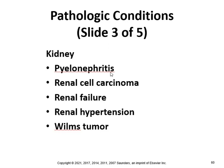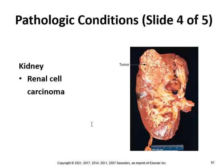Pyelonephritis is inflammation of the lining of the renal pelvis. Renal cell carcinoma is an adult cancer of the kidney, accounting for about two percent of all adult cancers. Renal failure and renal hypertension are also serious conditions. A Wilms tumor is a malignant tumor of the kidney occurring in childhood.